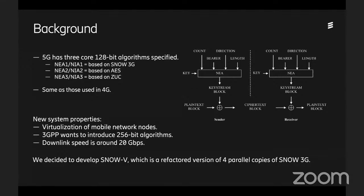The algorithms need to be really fast in both hardware and software in a pure COTS environment. Additionally, 3GPP, the standardization organization, has started to look at 256-bit algorithms. The anticipated download speed is around 20 gigabits per second or even faster. We decided to develop this new algorithm, which is a refactored version of four parallel copies of Snow 3G, to meet these three new properties.